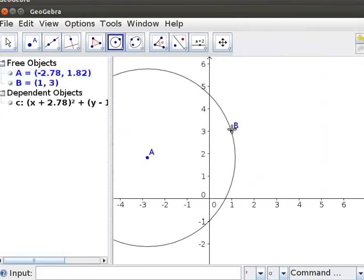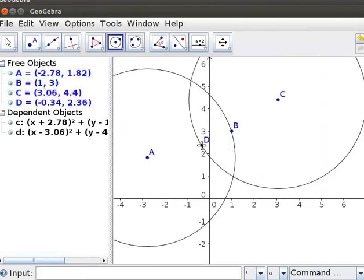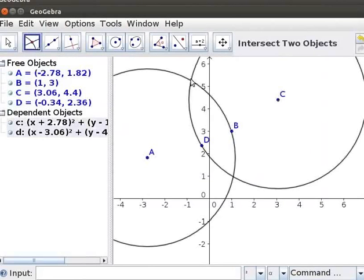Let us construct another Circle with Center C which passes through Point B. Click on the Drawing Pad, it shows Point C. Then click again we get Point D. The two circles intersect at two points. Click on the Intersect Two Objects Tool below the new point. Click on the Points of Intersection as E and F.